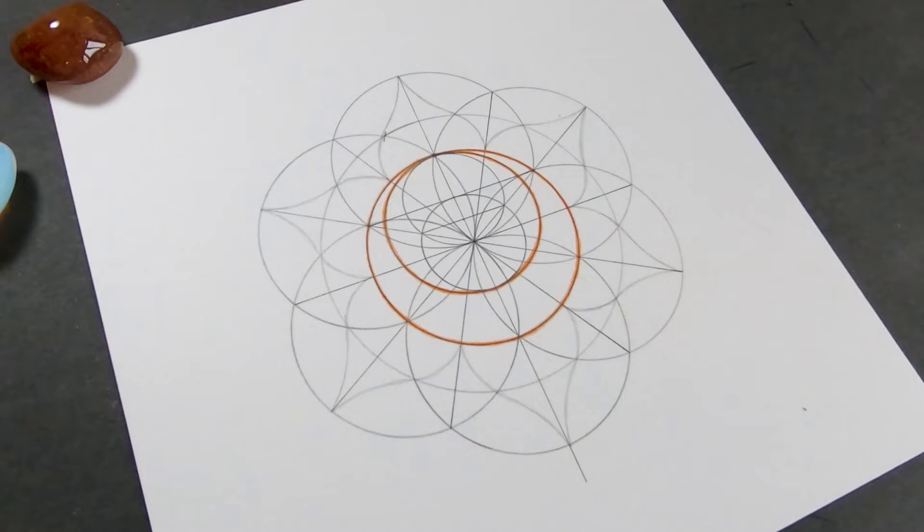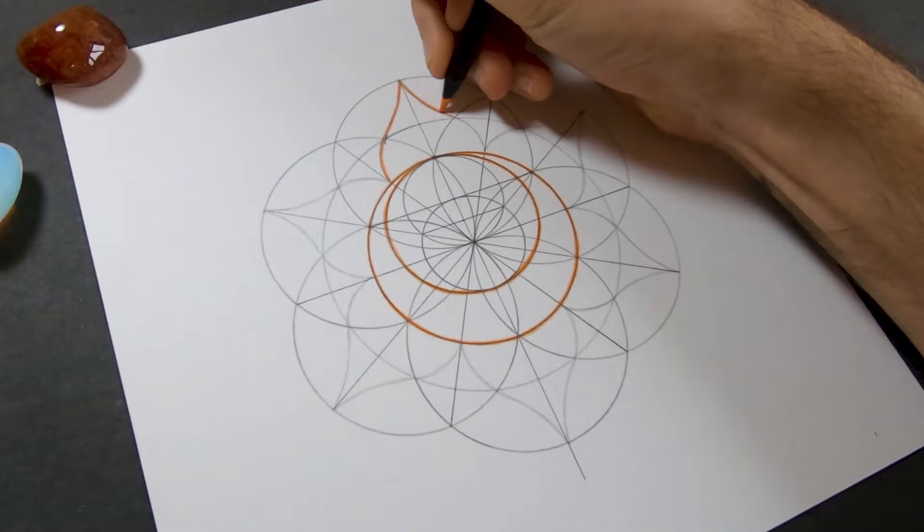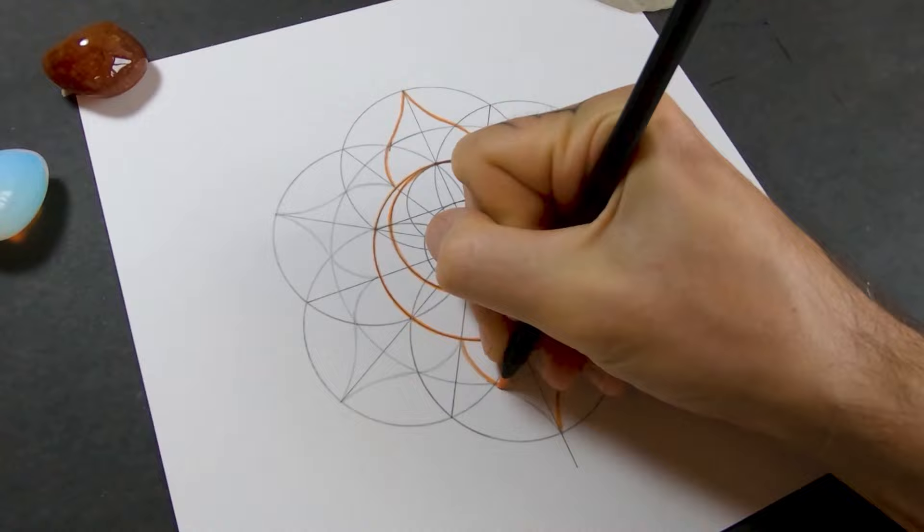And that's all there is to it, that's the basic structure of the sacral chakra. And then from this point you can just add as much detail as you want. Do whatever you want, just make it your own.